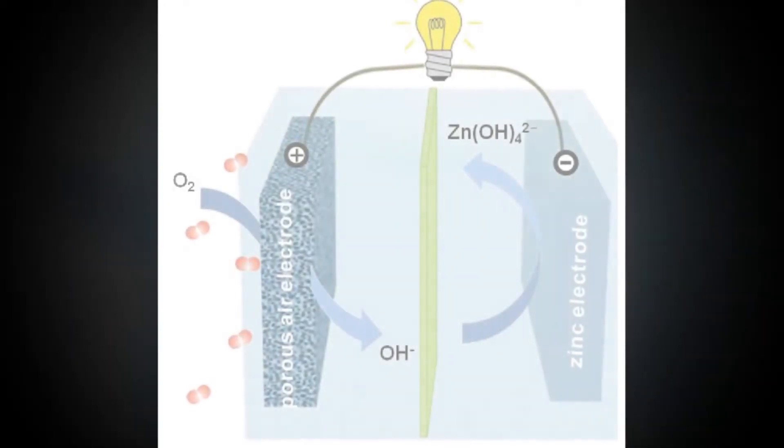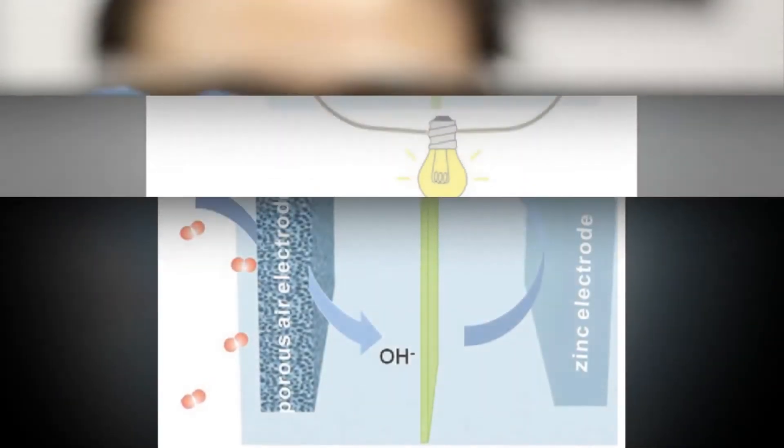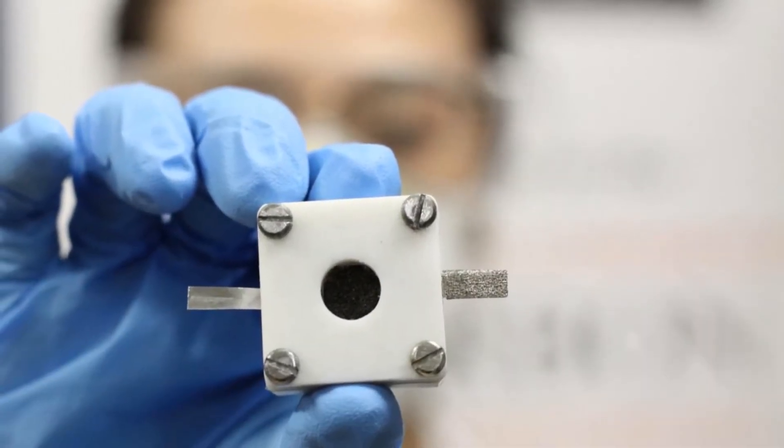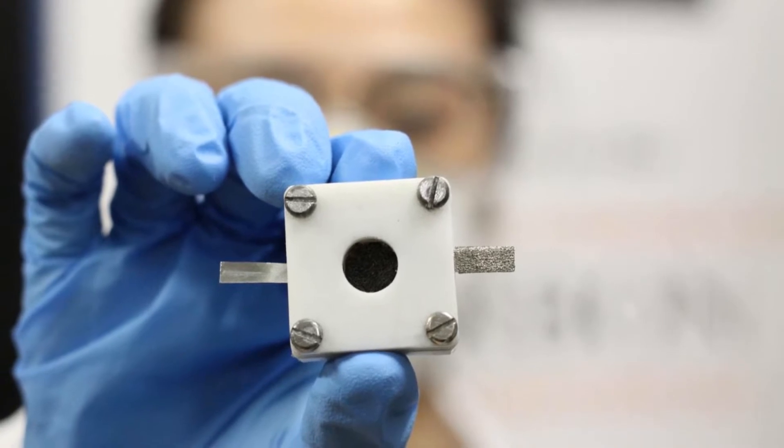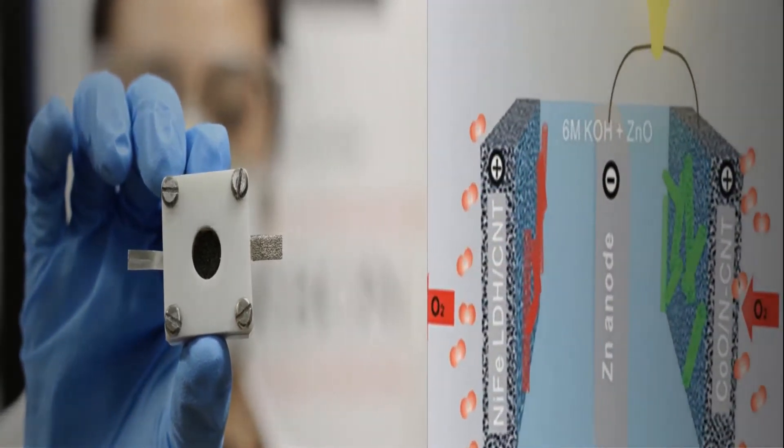University of Sydney researchers have found a solution for one of the biggest stumbling blocks preventing zinc air batteries from overtaking conventional lithium-ion batteries as the power source of choice in electronic devices.